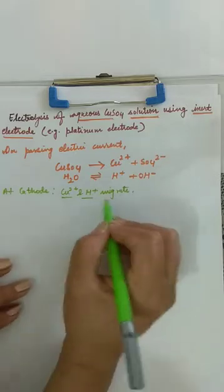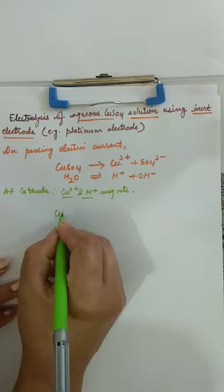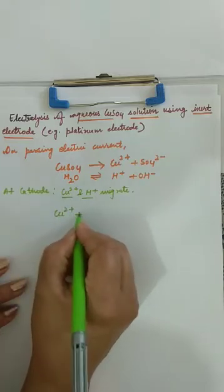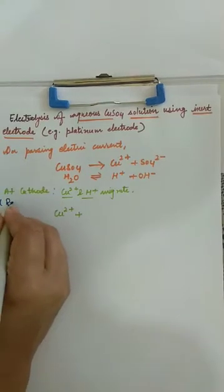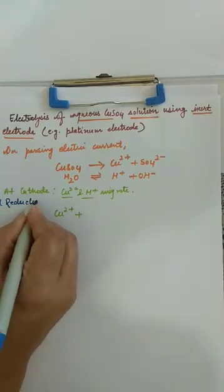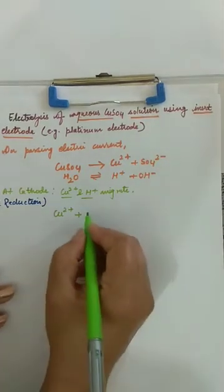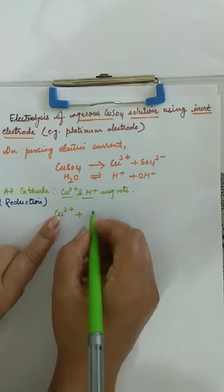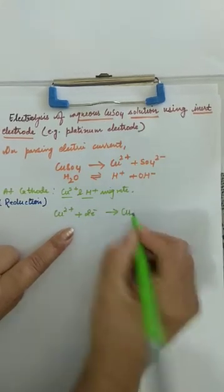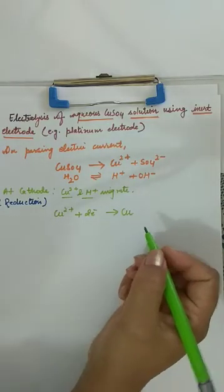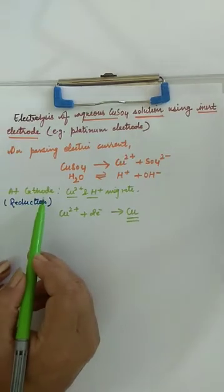Whereas H+ ions will remain in the solution. Therefore, Cu2+ at cathode — reduction takes place, reduction means gain of electron — so Cu2+ will get two electrons and form copper metal. This copper will get deposited at cathode.